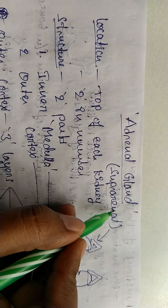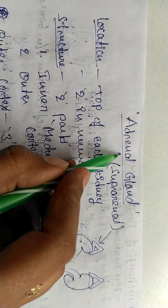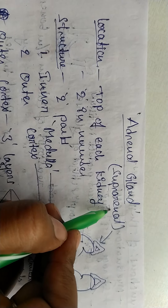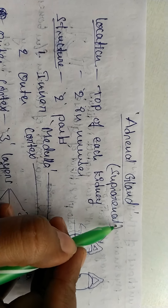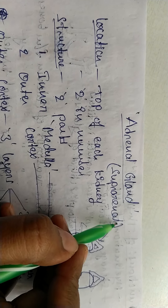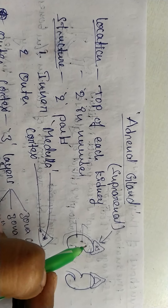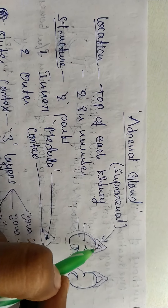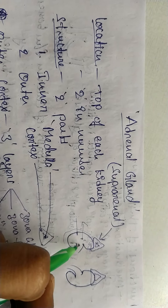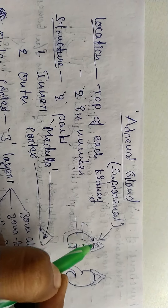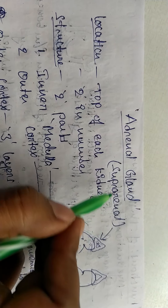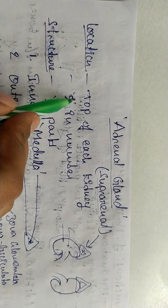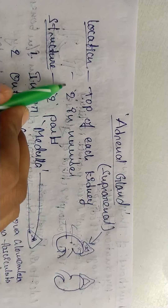Today we are discussing about the adrenal gland. Adrenal glands are also called suprarenal glands. The reason for calling them suprarenal glands is their location — they are situated in the superior region of the kidneys. That's why they are also called suprarenal glands. Their location is at the top of the kidney.